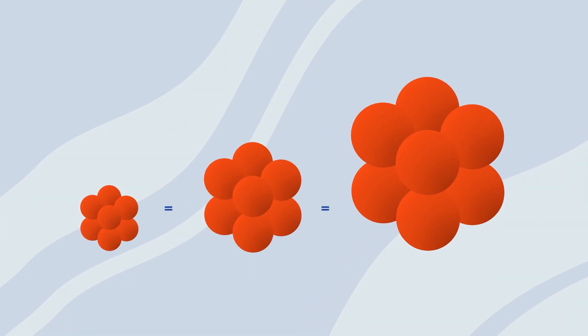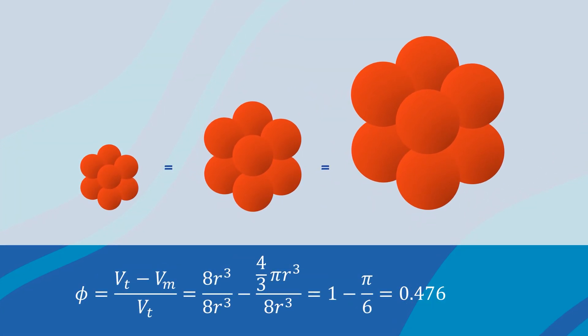We can conclude that the grain size does not affect the porosity of the rock, as all the radii in the equation cancel out. In other words, having large spheres or small spheres will lead to the same porosity as long as they are of the same size and of the same packing.